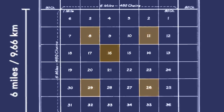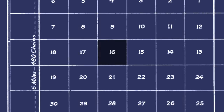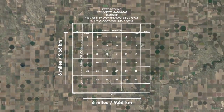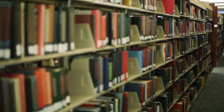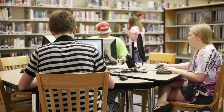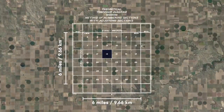Section 16 was always reserved for education. In a lot of cases, schools were physically put in section 16 of their township, so you'll still find many schools today in section 16, but in many other cases the state just sold off the section 16s and the proceeds were put towards public education. The other reserved sections—8, 11, 26, and 29—were held by the federal government for later sale with the expectation that the land prices would increase.